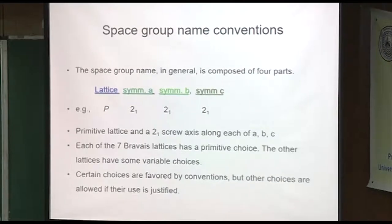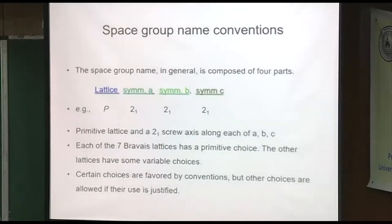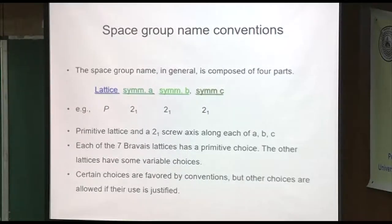Let's look at the space group name convention — this is the key to understanding what's going on. There are four slots. The first refers to the lattice type: P, C, I, or F. C can also be A or B. This is an orthorhombic space group: P212121. It's chiral and has three screw axes along each of the three directions. It's a fairly common space group. The symmetry operation of screw axes is along A, B, and C.